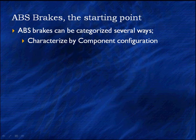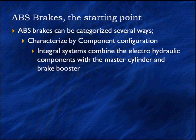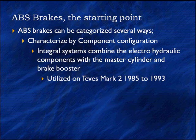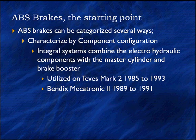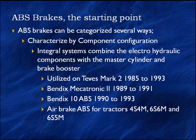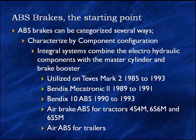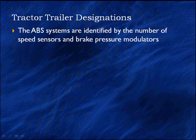Brake systems with ABS can be categorized by the number of component configurations. Integral systems are combined electro-hydraulic units with the master cylinder and brake cylinder — used early on, in the Teves in '85–'93 and Bendix in '89–'91. For truck air brakes, tractors, and trailers, we see designations like 4S/4M — this nomenclature can be confusing because there are so many ways of identifying these systems.